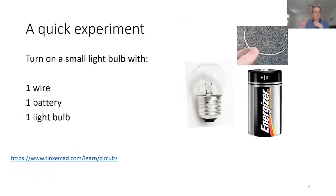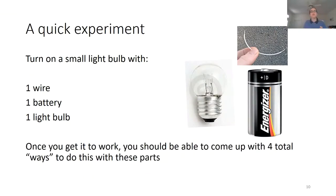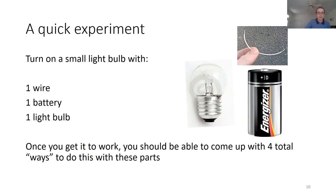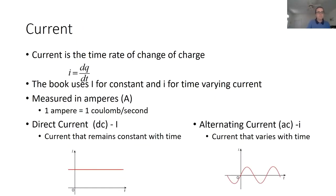You should have been able to come up with four different ways to do this. In this case, an LED — a light emitting diode, which you'll learn about in this class — is directional, so you wouldn't have been able to come up with four ways. But a light bulb is not directional; it doesn't care which way you put it, so you can come up with all four options.